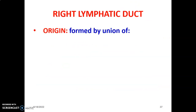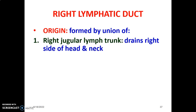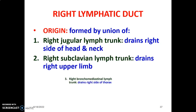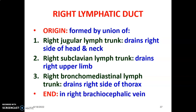There is also a right lymphatic duct, equivalent to the thoracic duct but on the right side. It is formed by the union of the right jugular lymph trunk, the right subclavian lymph trunk, and the right bronchomediastinal lymph trunk — the corresponding tributaries on the right above the diaphragm. These three unite to drain lymph from above the diaphragm on the right side. The right lymphatic duct terminates in the right brachiocephalic vein, while the thoracic duct terminates in the left brachiocephalic vein.